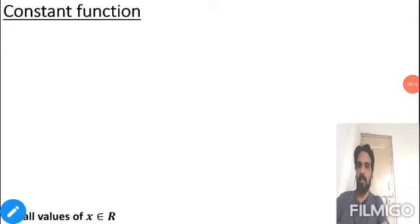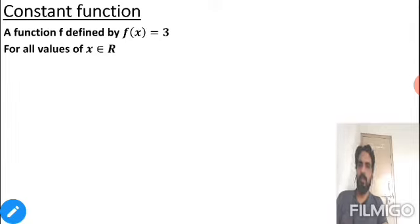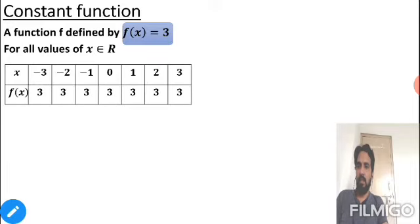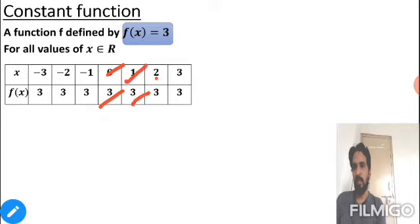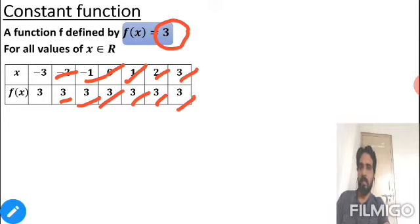The second type is the constant function. As the name suggests, its value is fixed. For example, f(x) = 3, which means y = 3. Whatever value of x you put inside, the output is always 3. From the table: x = 0 gives 3, x = 1 gives 3, x = 2 gives 3 — whatever number you put, the output does not change because this function is defined as f(x) = 3.